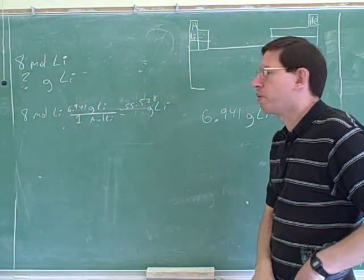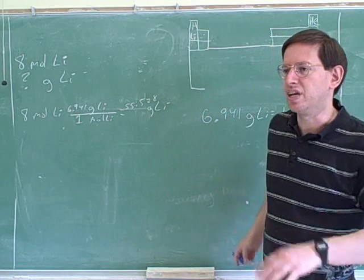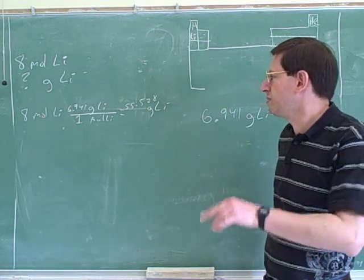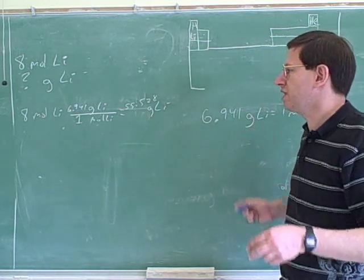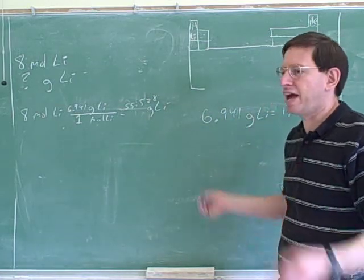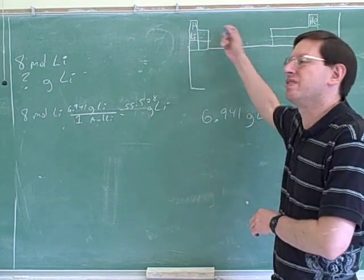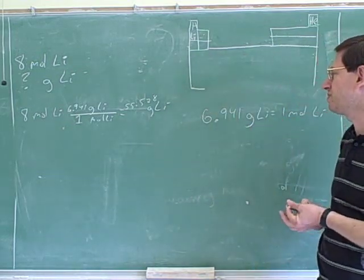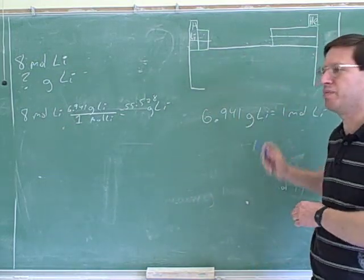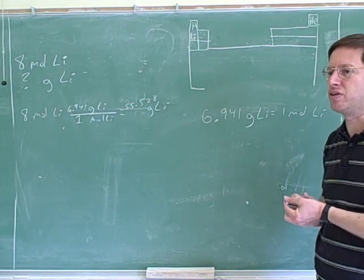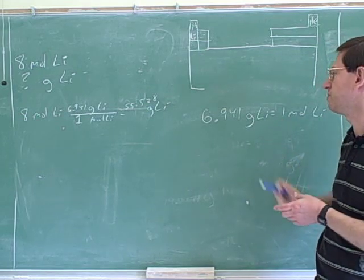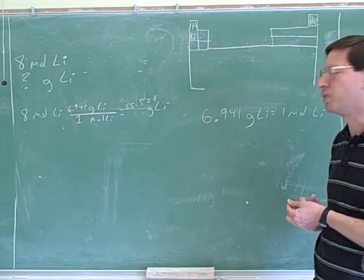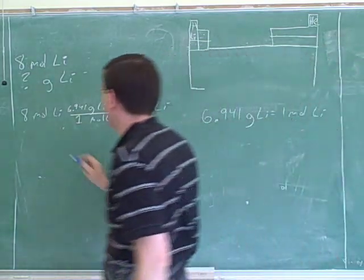This is really unit conversion, but it's a little trickier because we didn't get the conversion ratio from a table in the back — we got it from the periodic table. The periodic table gives us very valuable conversion ratios: the way to convert between grams and moles, or between moles and grams.